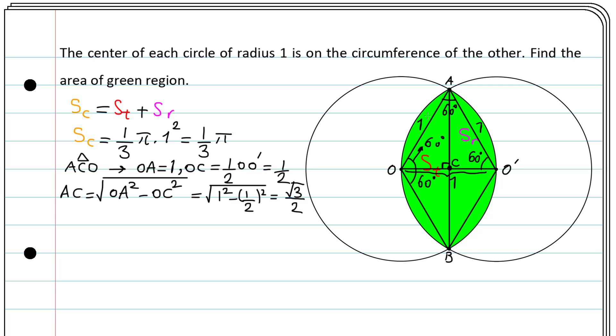The base of triangle OAB is AB, which is twice as long as AC. So AB equals 2 times AC, which is square root of 3. We have the base AB and the height OC, so ST equals one-half of base AB times height OC, which equals one-half times square root of 3 times one-half, giving square root of 3 divided by 4.